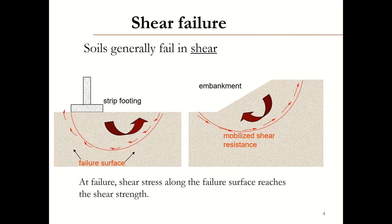In the case of an embankment, due to the slope, one part of the soil will try to move away from the other part. Another example is strip footing, where the soil beneath the footing will try to move away due to the vertical load coming to it. Soil generally fails in shear because before crushing, the soil will fail by sliding, and at failure the shear stress along the failure surface reaches the shear strength.